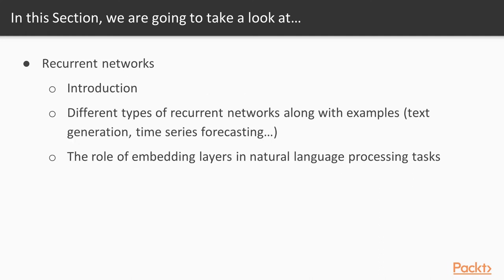The second part will be about recurrent networks. We'll have an introduction covering sequential data and why we use recurrent networks. We'll see different types — one-to-one, many-to-one, one-to-many, many-to-many — with different cell types like LSTM and GRU. We'll look at examples for text generation and time series forecasting, and finally the role of embedding layers in natural language processing tasks.